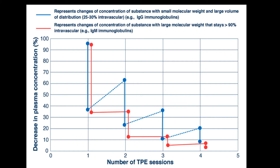Kinetic models for prediction of substance removal have been developed. The half-life and volume of distribution of the substance to be removed must be considered when planning the intensity and frequency of TPE sessions. The plasma volume to be replaced is determined by calculating the total blood volume and the total plasma volume (TPV) of the patient. The 2019 ASFA recommendation suggests exchanging 1.0 to 1.5 times the individually calculated TPV.